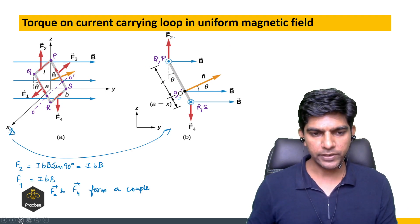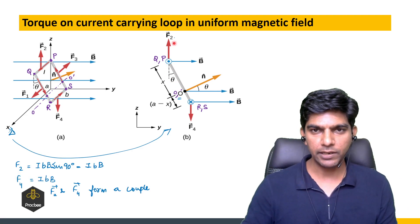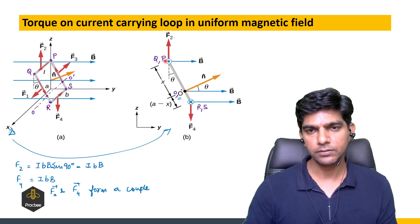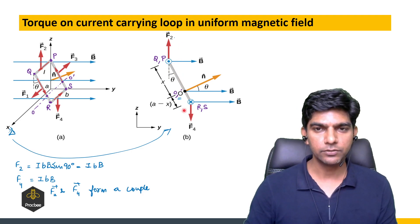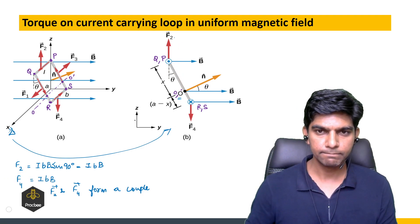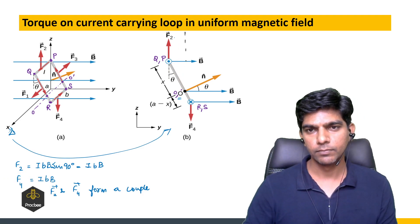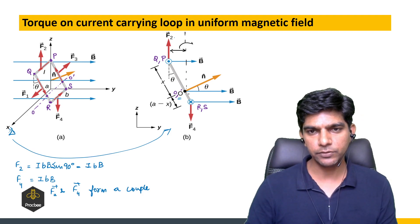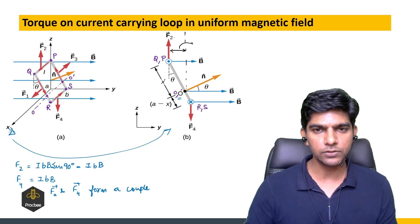Now the line of action of F2, its perpendicular distance from the axis - let us find that. So that will be this length, X sin theta. Let us calculate X.